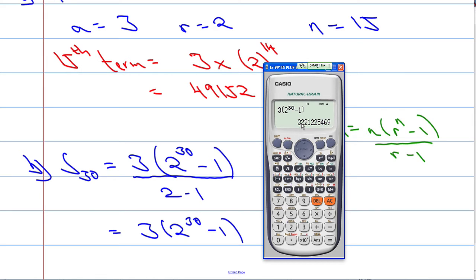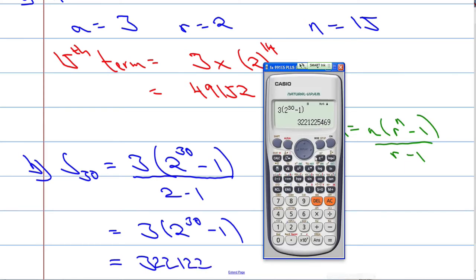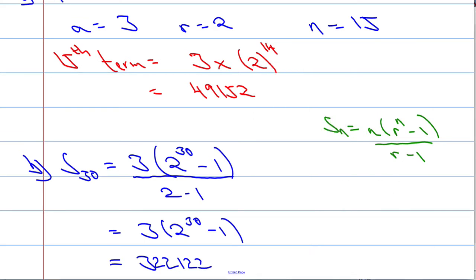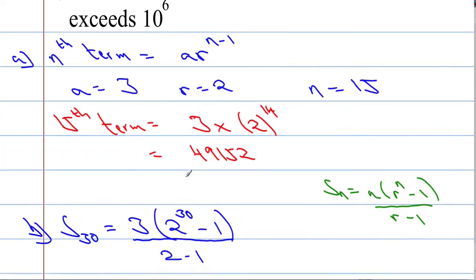That's going to give us an incredibly large number. The answer is 3,221,225,469 — approximately 3.22 billion. So that's the sum of the first 30 numbers.